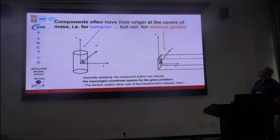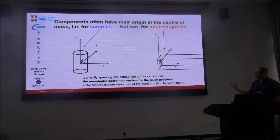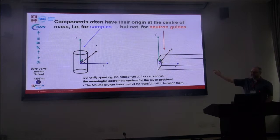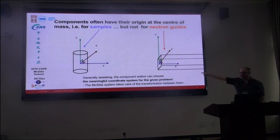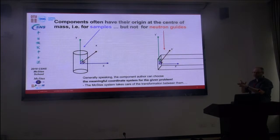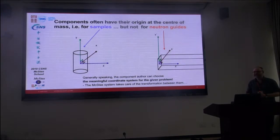An important point is that the coordinate system often starts at the center of mass of the object, but not for the guides. For guides, when I place it here, it means it's the beginning of the guide. This means whenever you refer to the position of the guide, you have to refer to the beginning of the guide, and you must add the length of the guide to the position of the subsequent element, otherwise it will overlap. Everybody has made this kind of error in the past — it's normal to get accustomed to the code.